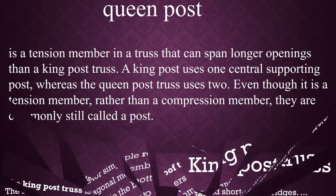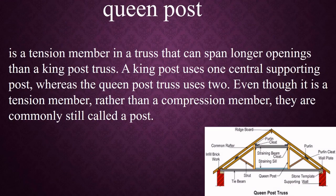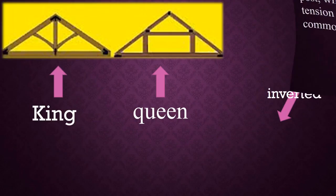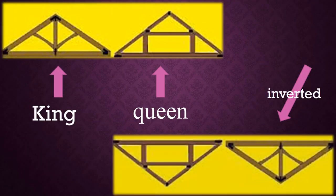The second one is queen post truss. The queen post truss is a tension member in a truss that can span longer openings than a king post truss. A king post uses one central supporting post whereas the queen post truss uses two. Even though it is a tension member rather than a compression member, they are commonly still called a post.